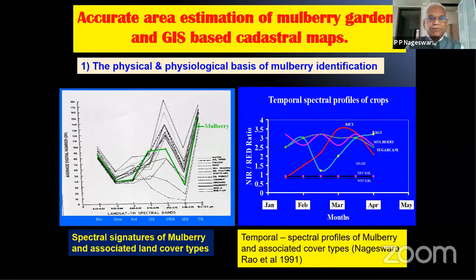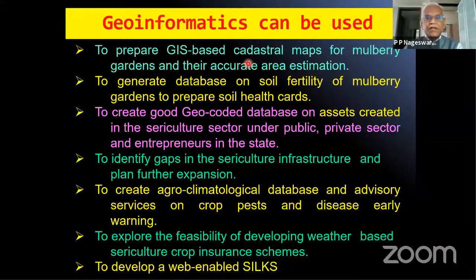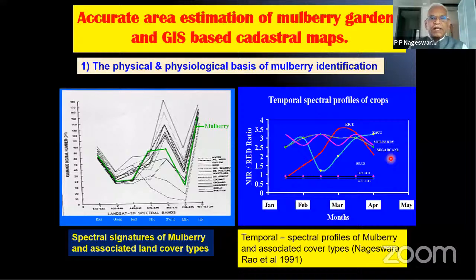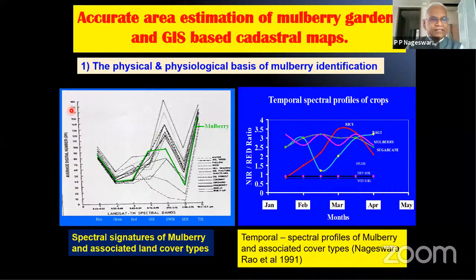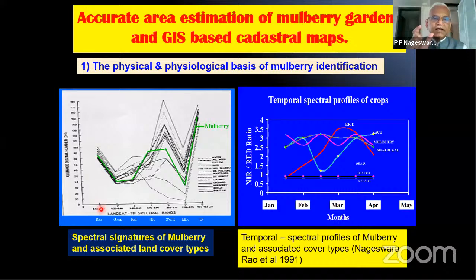For accurate estimation of area under silkworm food plants, you need to know the physical and physiological basis of identifying food plants. Here is an example of mulberry crop identification. If you plot reflectance values coming from the mulberry garden — expressed in digital numbers on one axis and the various bands of the electromagnetic spectrum on the other — you get a spectral signature. The electromagnetic spectrum's visible range consists of violet, indigo, blue, green, yellow, orange, and red, with infrared beyond red and ultraviolet shorter than violet.